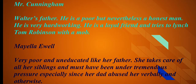Mayella Ewell is about 19 years old. She's a poor, uneducated girl, like her father. She takes care of all her siblings. We could think that Mayella may have been under tremendous pressure, especially given the responsibility of caring for her family. She goes along with her dad to wrongfully accuse Tom Robinson of raping her. She's very convincing, as she managed to get Tom Robinson to do additional jobs for her when he should have been on his way home to his family.